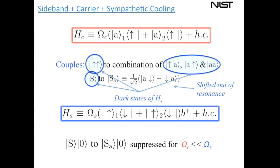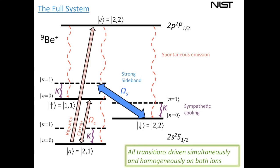The other states that are dark to the sideband Hamiltonian are not Stark-shifted off resonance, so we must deal with those as well. We add a re-pumper transition: with spontaneous emission from the fast-decaying excited state, population is rapidly pushed back into the qubit manifold. So the complete process involves three drives plus sympathetic cooling plus spontaneous emission — all applied homogeneously and simultaneously.